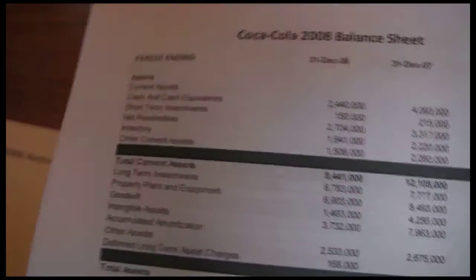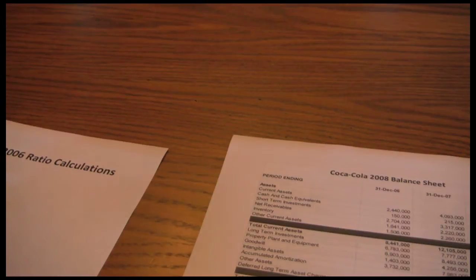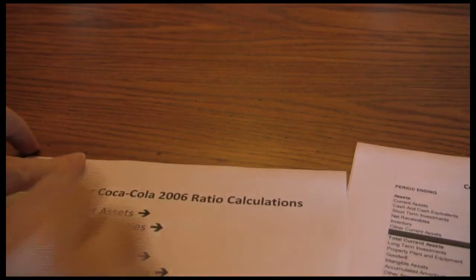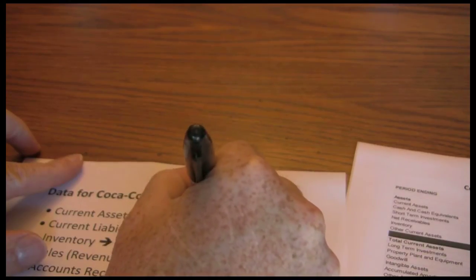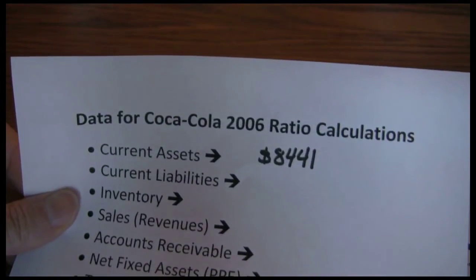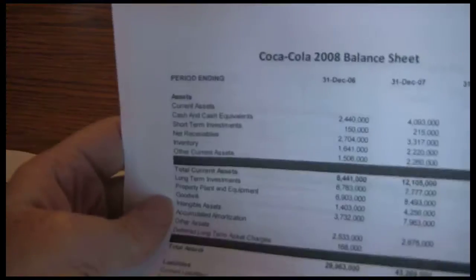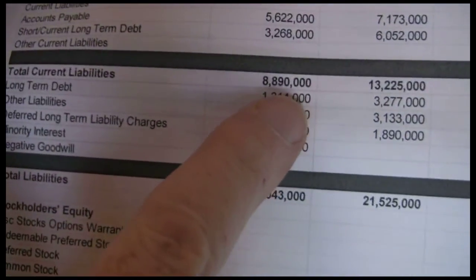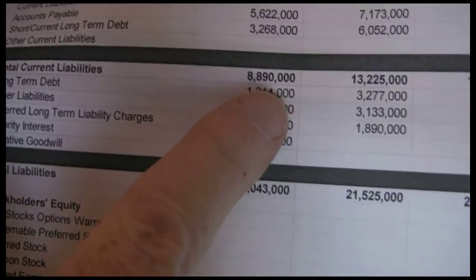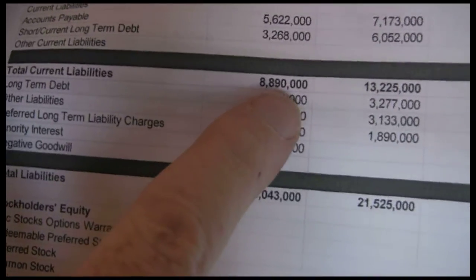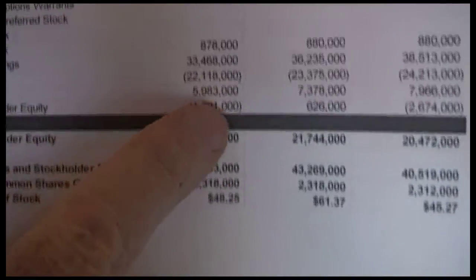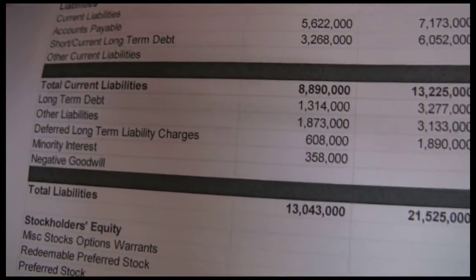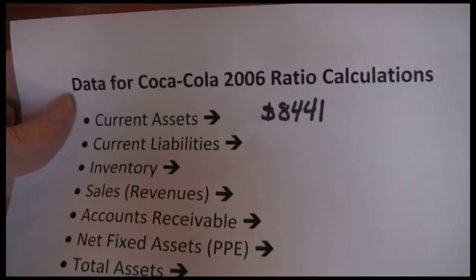We don't need all those zeros for calculations, so when we write that number down we're just going to write it as $8,441,000. So we have our current assets at $8,441,000. Next we want our current liabilities, which are also on the balance sheet. Total current liabilities are $8,890,000. All we need is $8,890,000 because everything has three zeros at the end and they'll all cancel out.